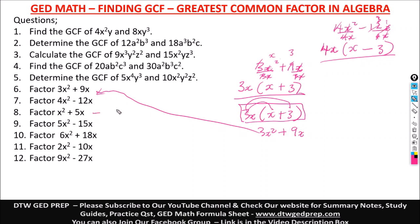For x² + 5x: there is no numeric common factor since the second term has an invisible coefficient of 1 on x, so just bring out x. Dividing x² by x gives x; dividing 5x by x gives 5. The factored form is x(x + 5). Opening the parentheses gives back x² + 5x.